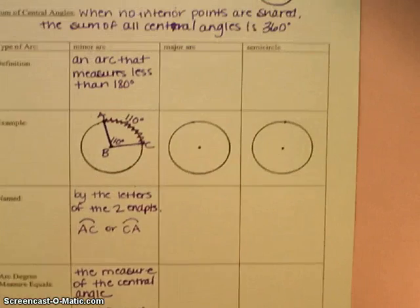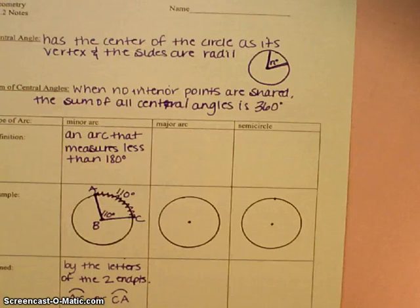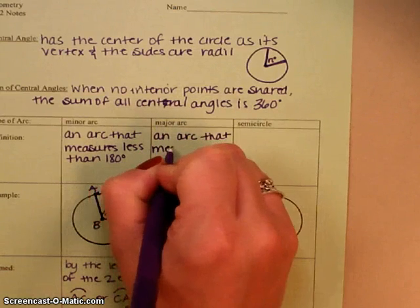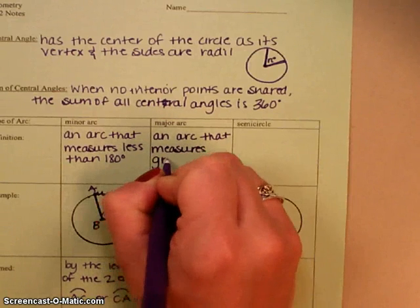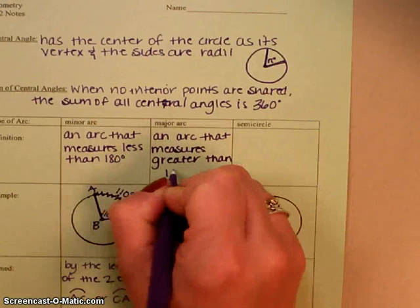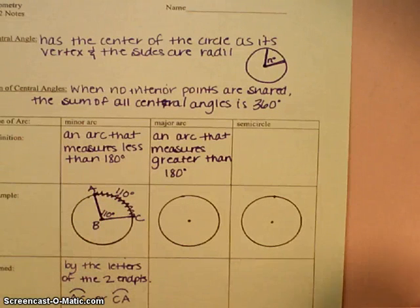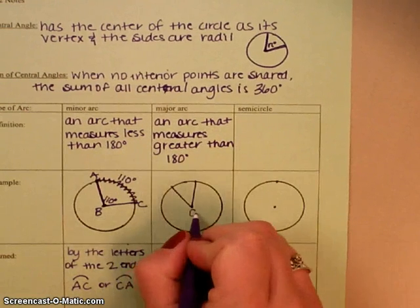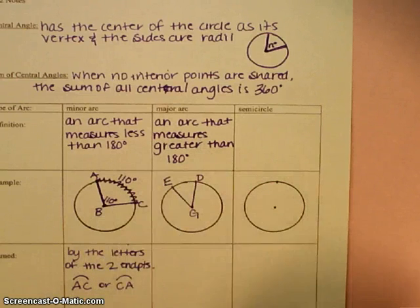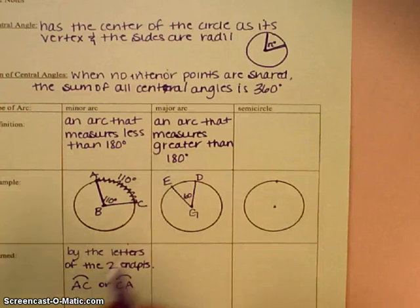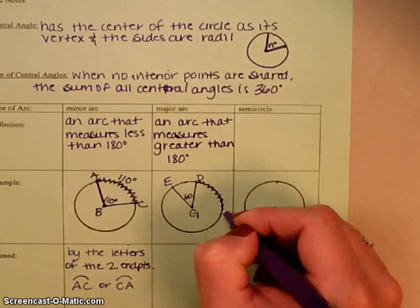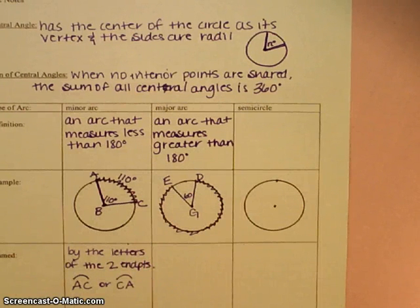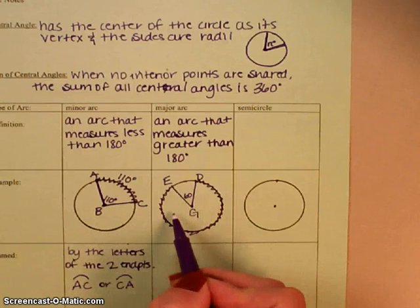The next one is what we call a major arc. Well, if a minor arc is an arc that measures less than 180, a major arc is an arc that measures greater than 180. So as far as an example, if I draw in a central angle like that, and I'm going to call this G, and then I'll put D and E on here. Let's say this central angle was 60 degrees. Well, that does not open up to a major arc. So what that would mean is that this whole arc here is the major arc. So rather than being 60, the measure of this whole thing is going to be 300.